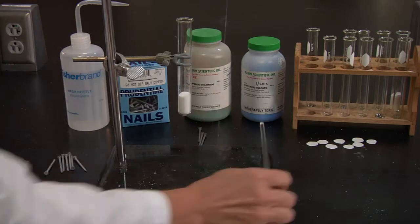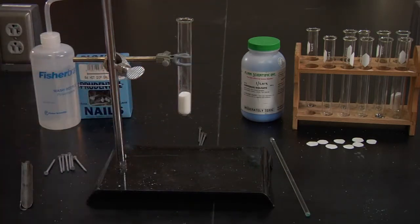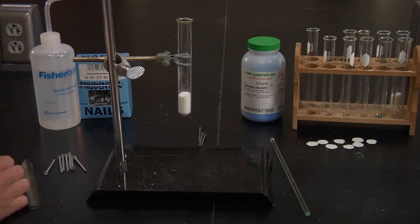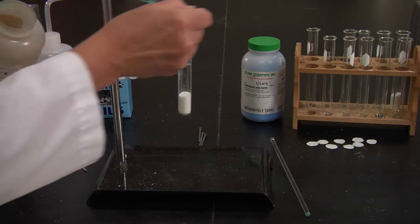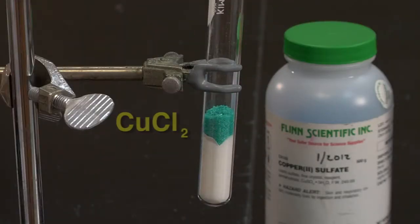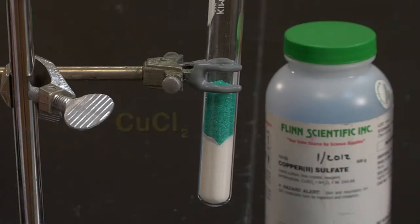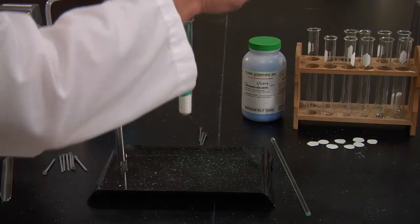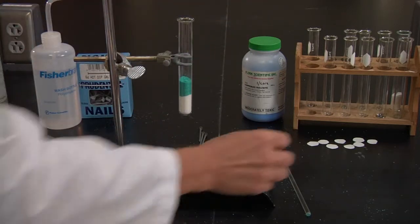Then I'm going to take copper chloride, and I'm going to put about the same amount of copper chloride as sodium chloride. We're going to take another piece of filter paper and put it over the top of that.